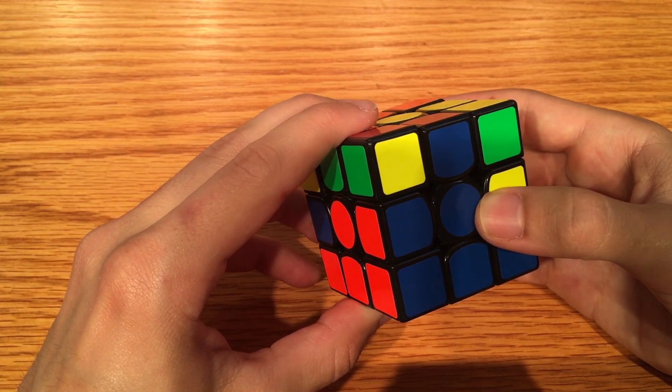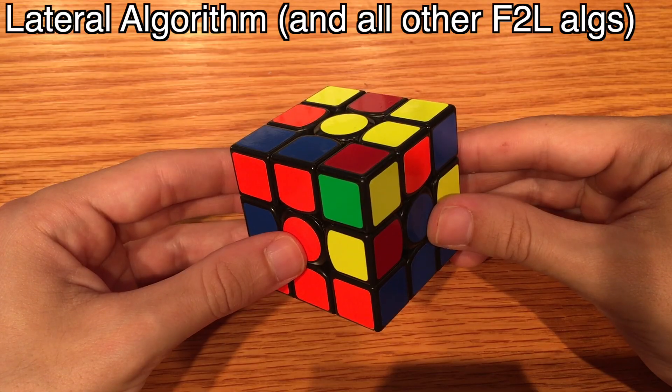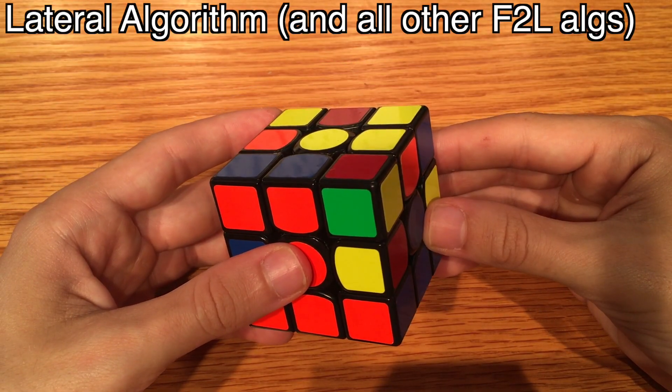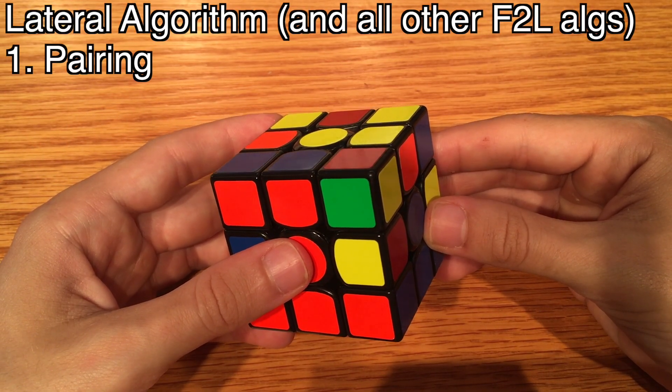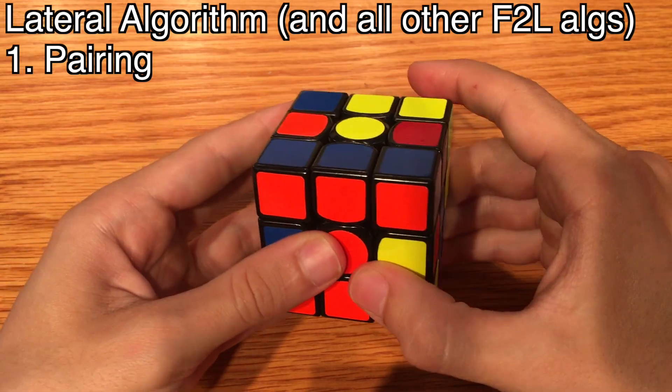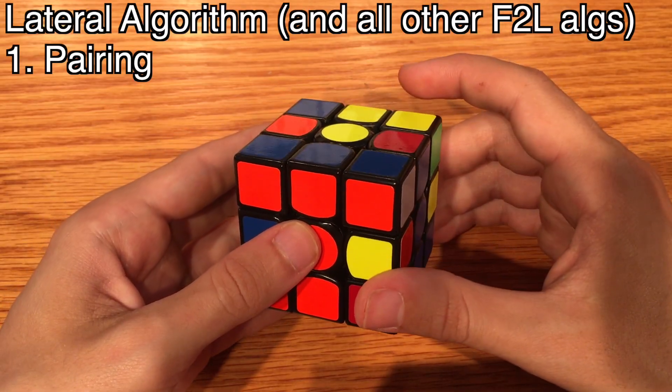So what did that actually do? Let's rewind. The lateral algorithm has two sections, each with four moves. The first section, called pairing, unsolves the white corner and places it next to the lateral. These two pieces together are called a pair.